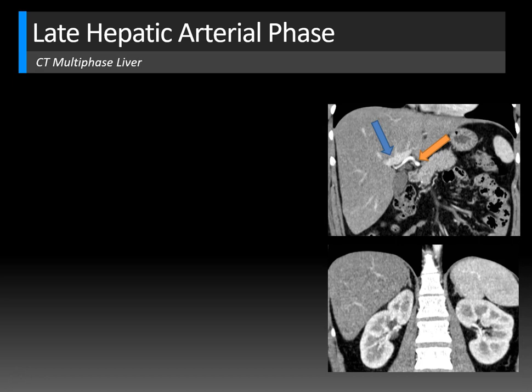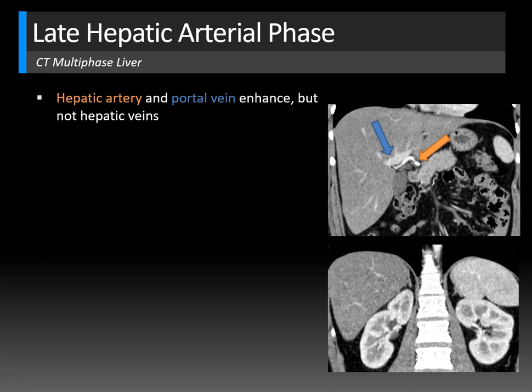On the late hepatic arterial phase, you should see the hepatic artery and the portal vein enhance, but not the hepatic veins — and you can see those structures denoted by the arrows. If you don't see any portal vein enhancement — meaning you only see the hepatic artery — you've scanned too early. And if you see the hepatic veins enhancing, then you're too late.